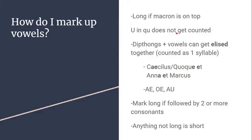For example, the diphthong AE in 'Caecilius' is not counted as four syllables but as three: 'Cae-ci-li-us' becomes 'Cae-ki-lius.' Another example of elision is 'quoque et,' which gets counted as 'quoquet.' When two different words are elided, the first vowel usually gets dropped — you say 'quoquet,' not 'quoque et.'